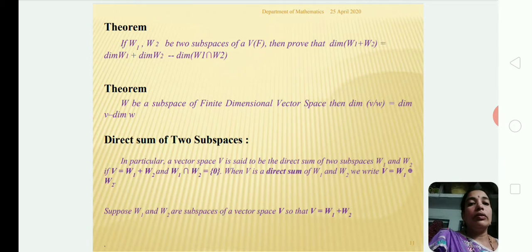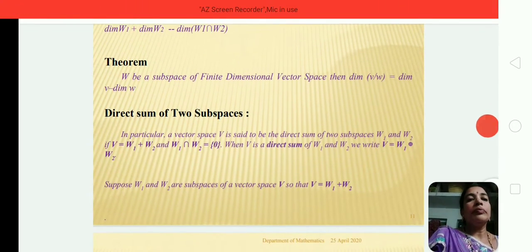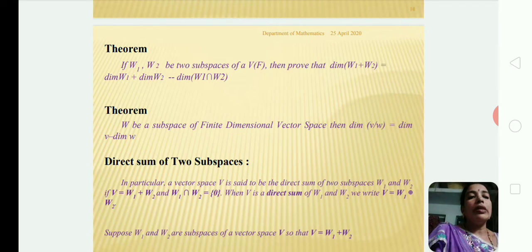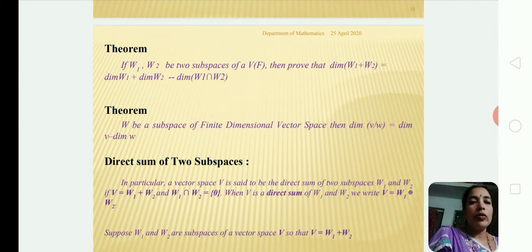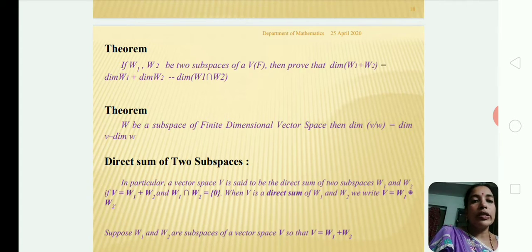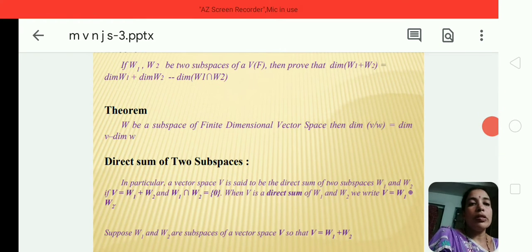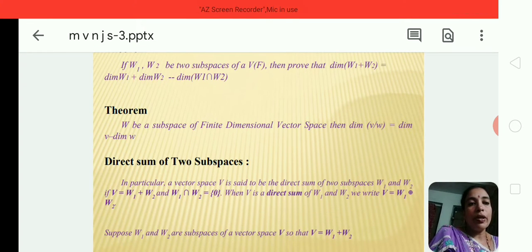First of all, this is a very important theorem. The statement is: if W1 and W2 are two subspaces of a vector space V over F, then dimension of W1 plus W2 is equal to dimension of W1 plus dimension of W2 minus dimension of W1 intersection W2.